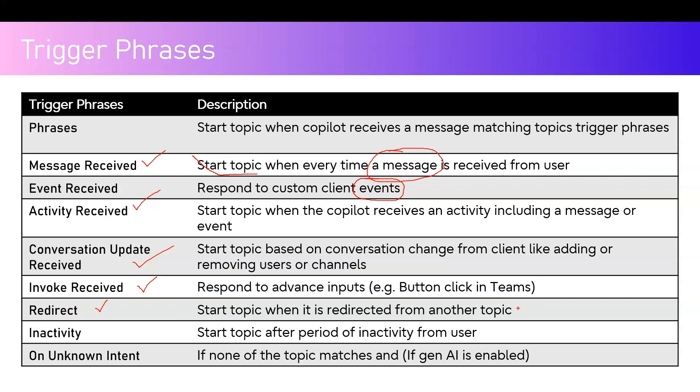Inactivity starts a topic after a period of inactivity from the user. For example, if your bot is inactive for 30 minutes, you can automatically trigger the Inactivity trigger to start or restart a conversation with the user. Essentially, it's an event where nothing has happened and you want to re-engage the user.